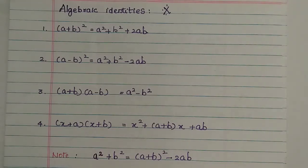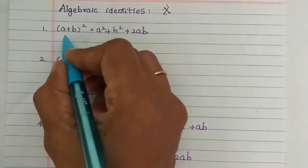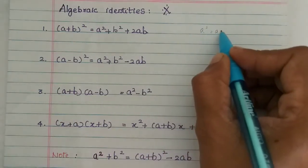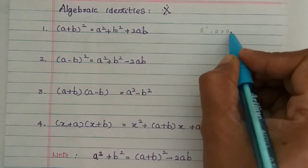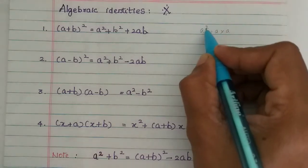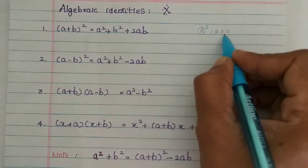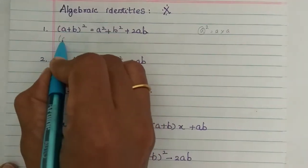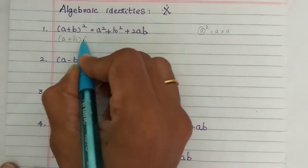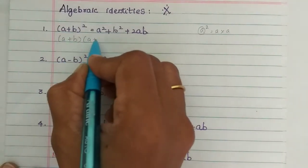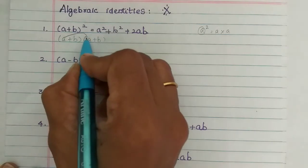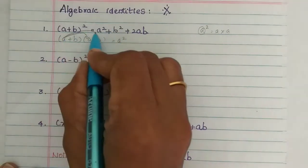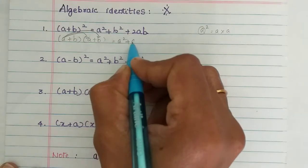So how does this formula come? Now, a plus b the whole squared — what is a squared? A into a is a squared. We will multiply it out. The square is a plus b into a plus b. Now, a into a is a squared. Then, a into plus b is ab.